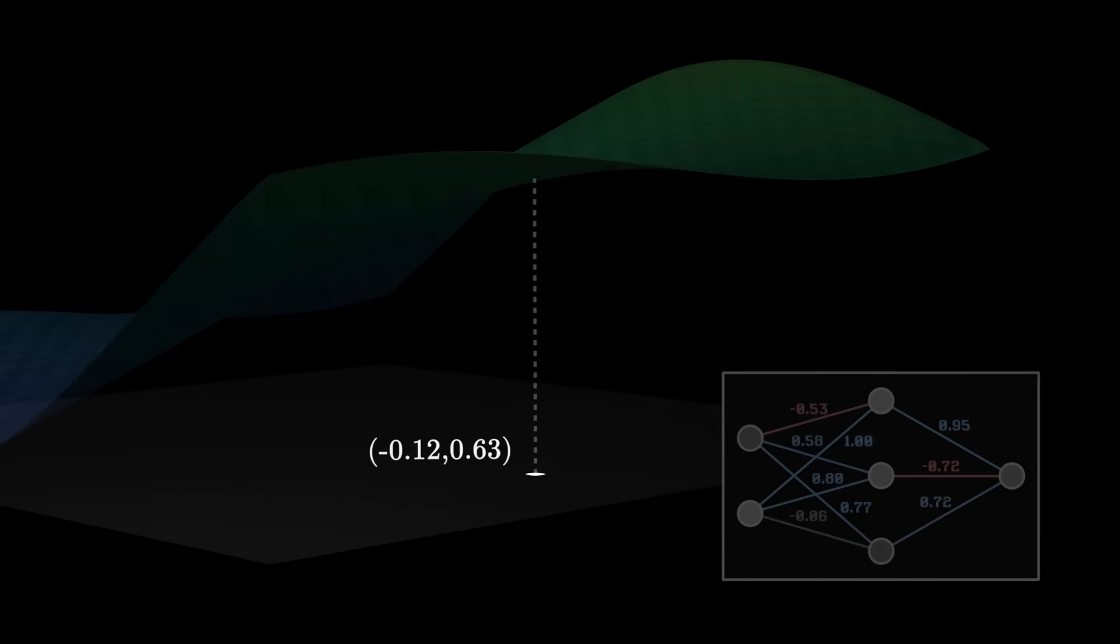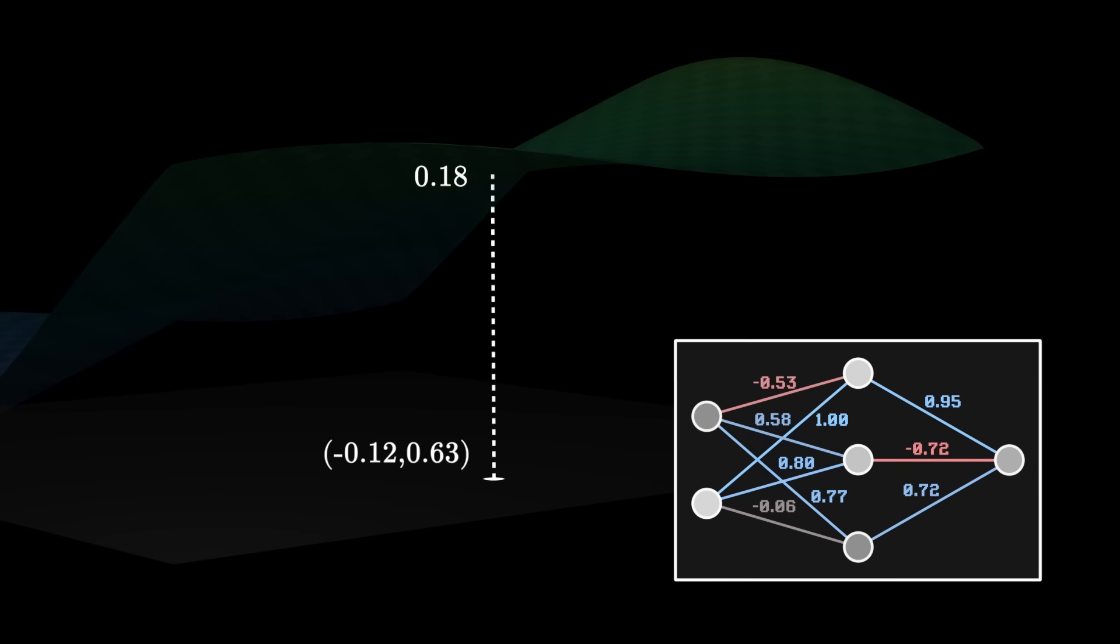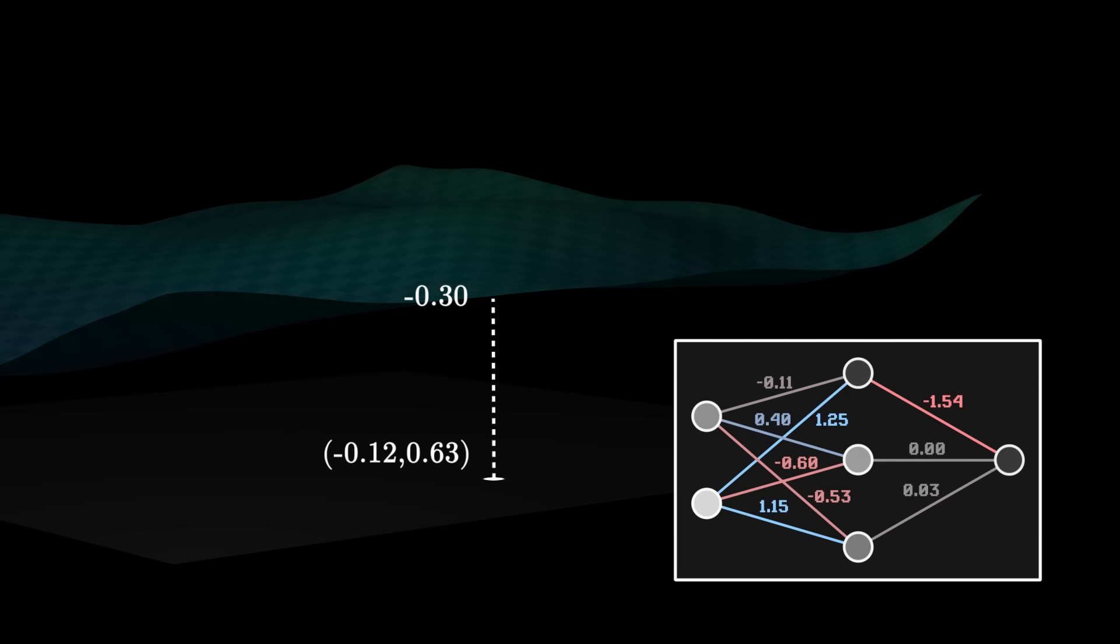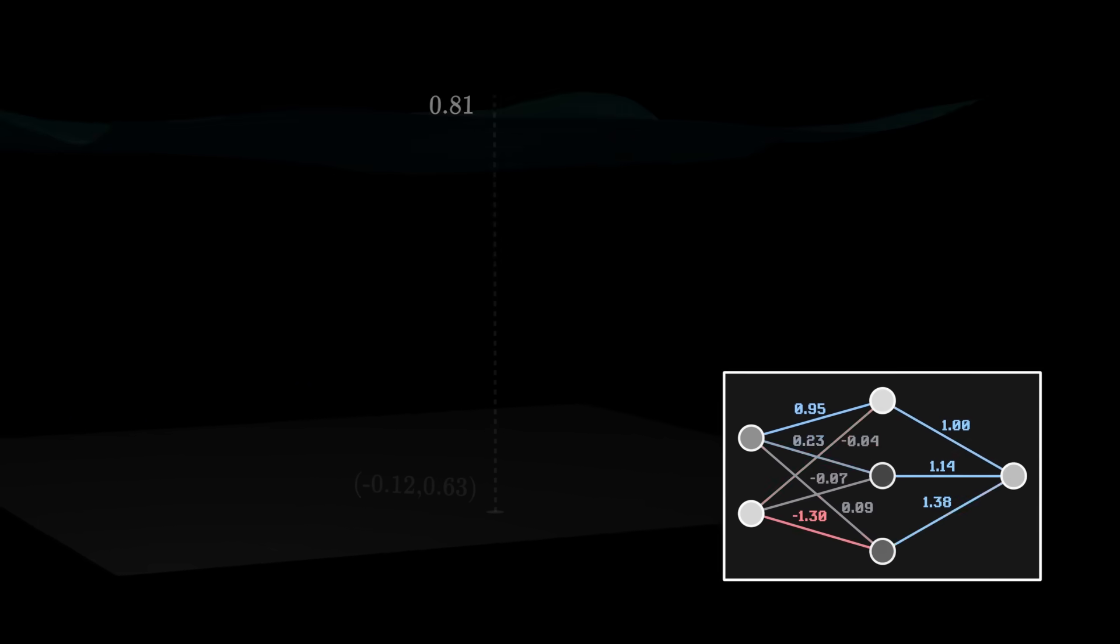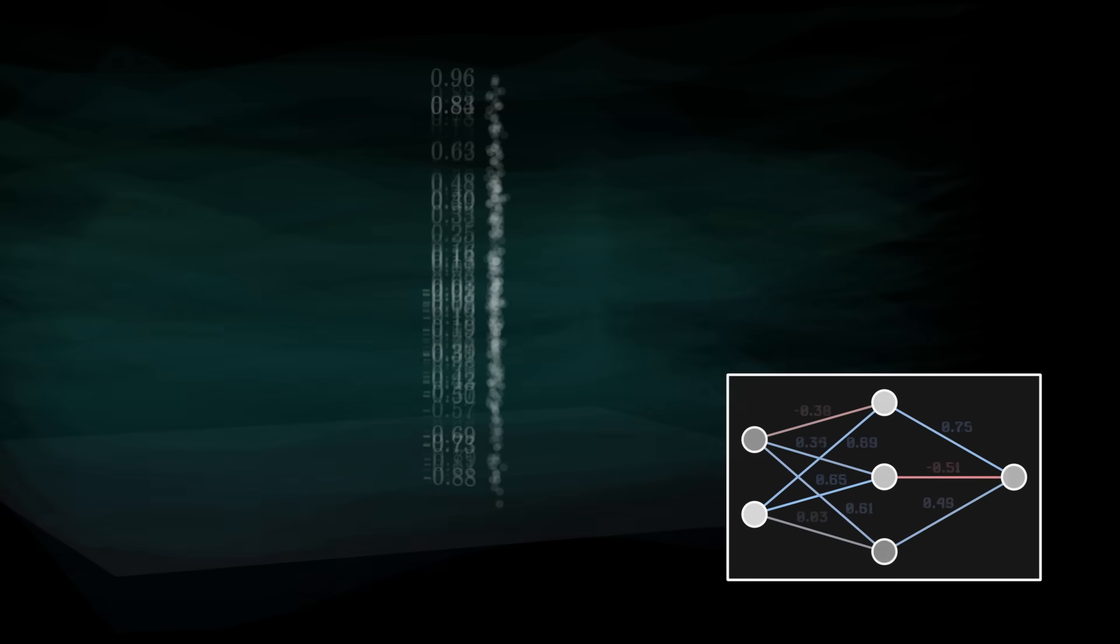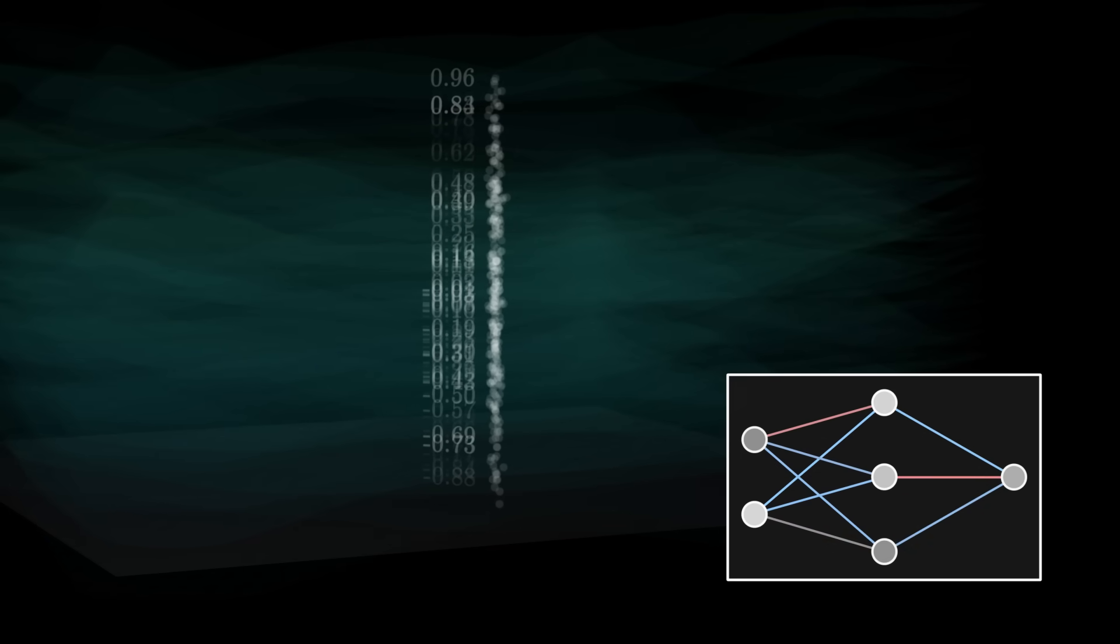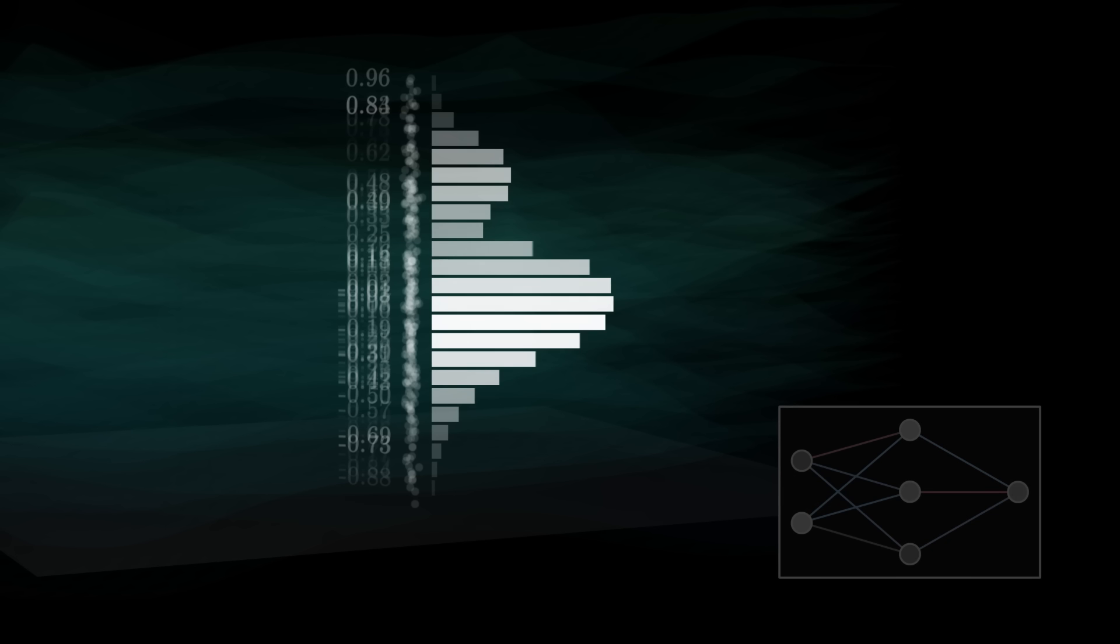Let's focus on one point. The network assigns it a certain value. If we change the network's parameters, we get different outputs. Let's randomly change the coefficients and visualise the superposition of all the values. Among all these numbers, we can see that some appear more often than others. The outputs of the network follow a certain statistical distribution. We are more likely to obtain certain values than others.